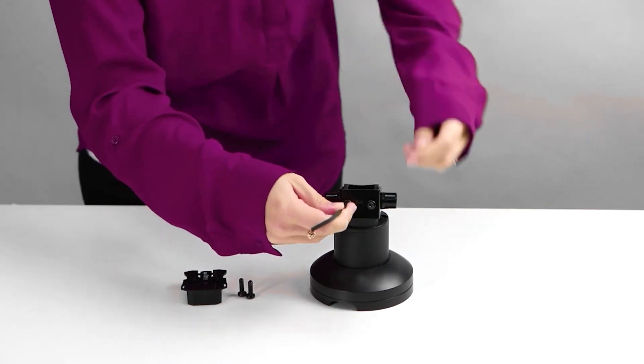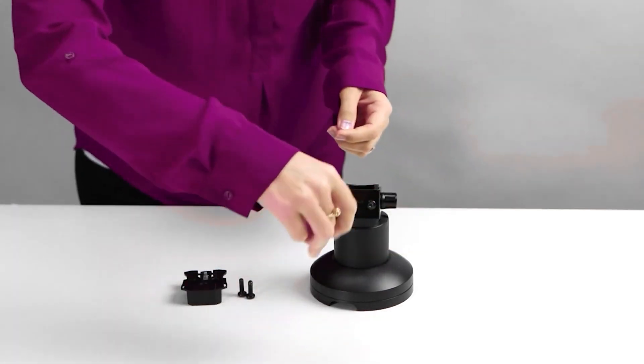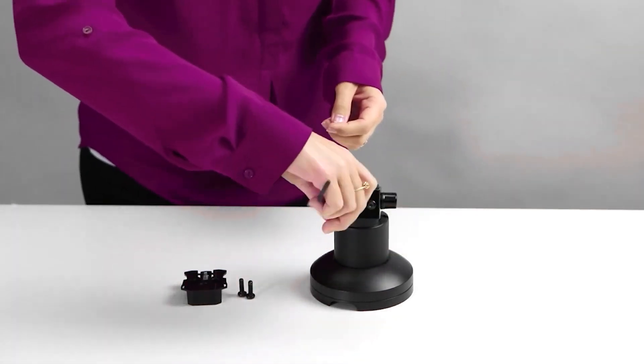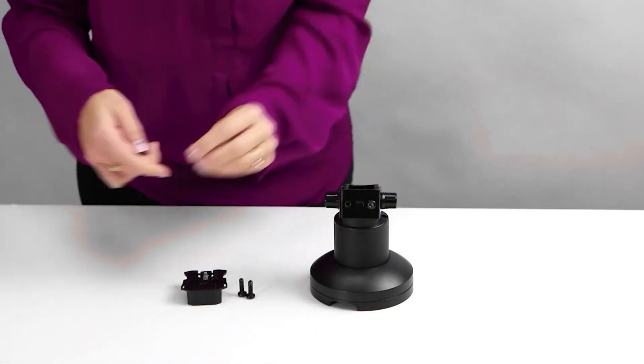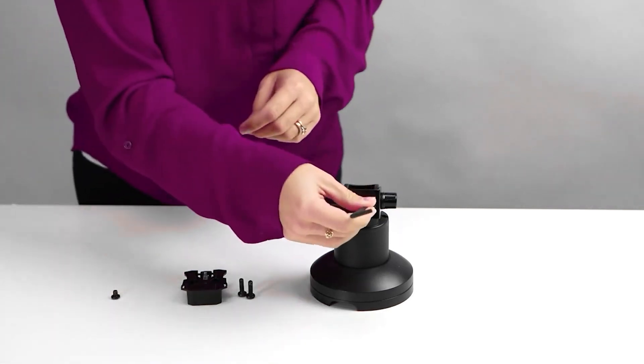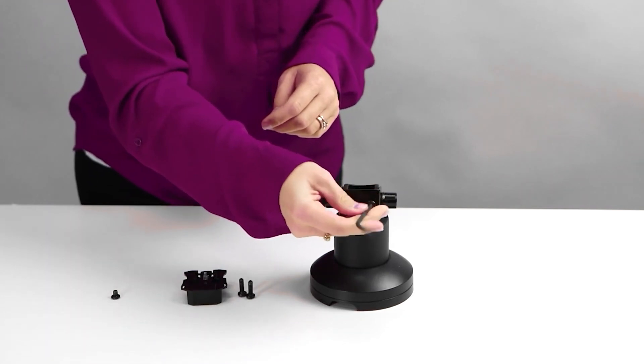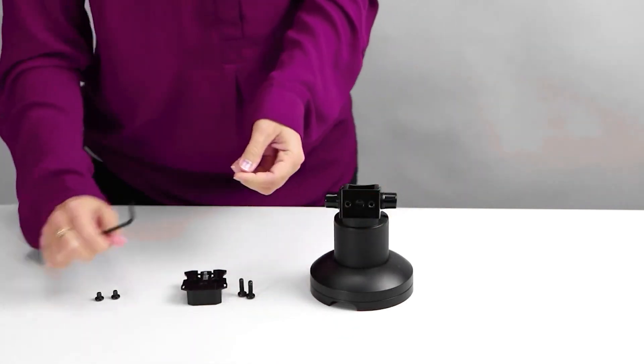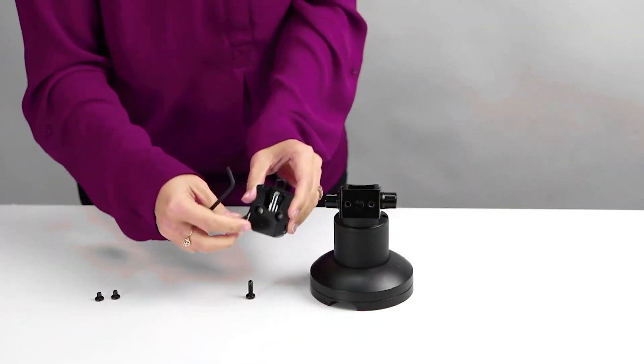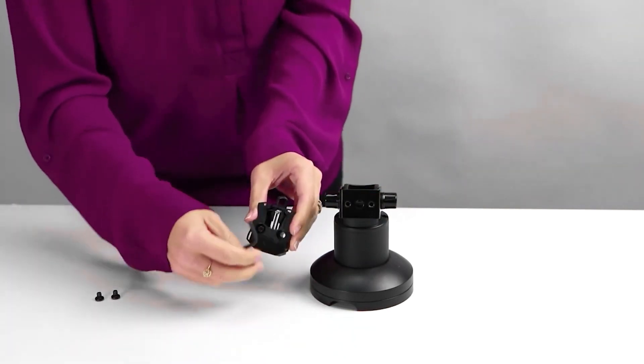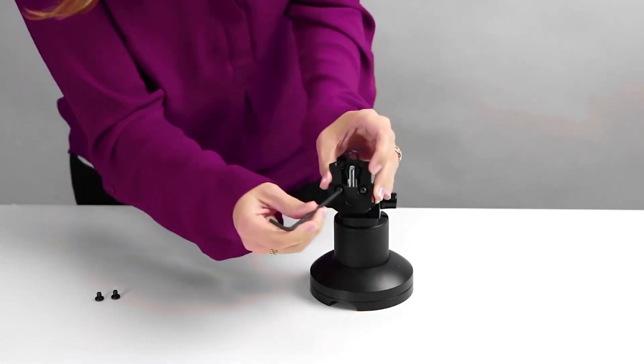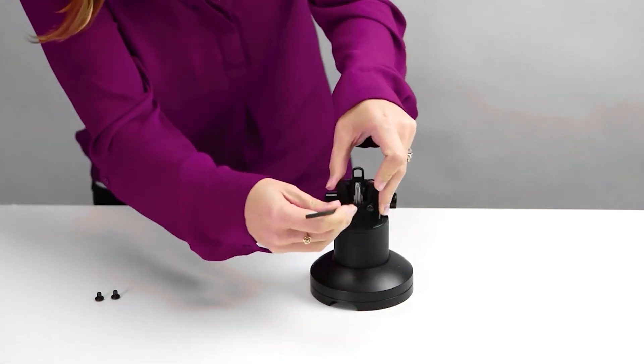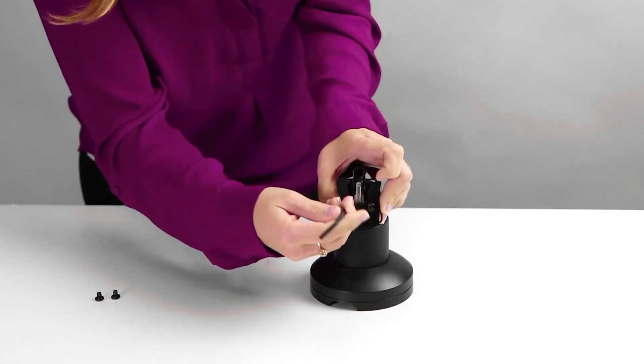Step 4A and 4B. Remove the two screws in the mount and discard. Next, take the Ingenico lean adapter and screw it into the mount using the two longer screws provided. Tighten with the provided T15 L key.